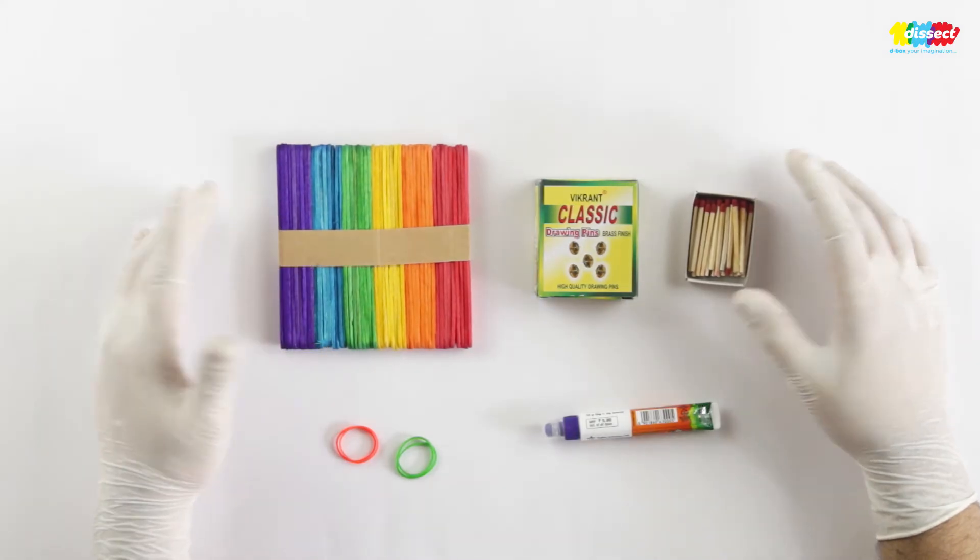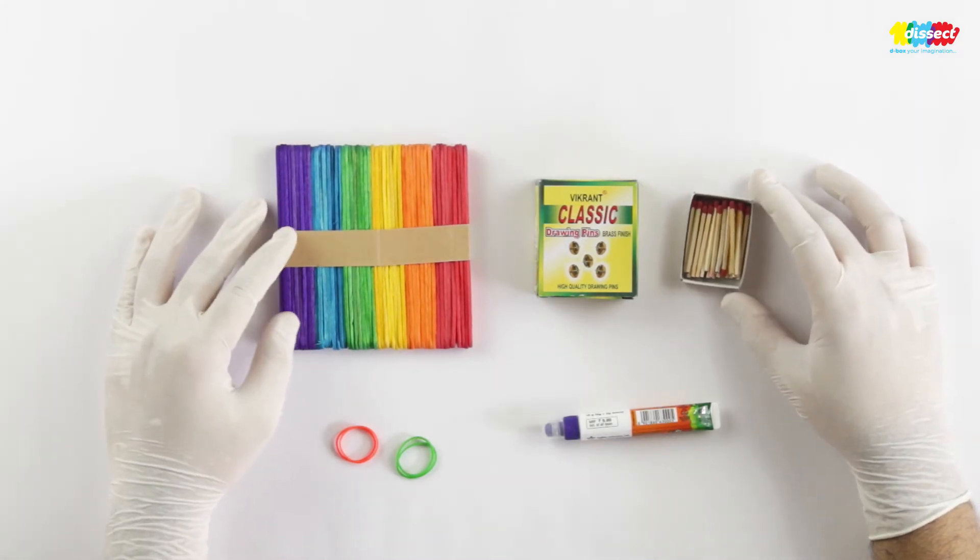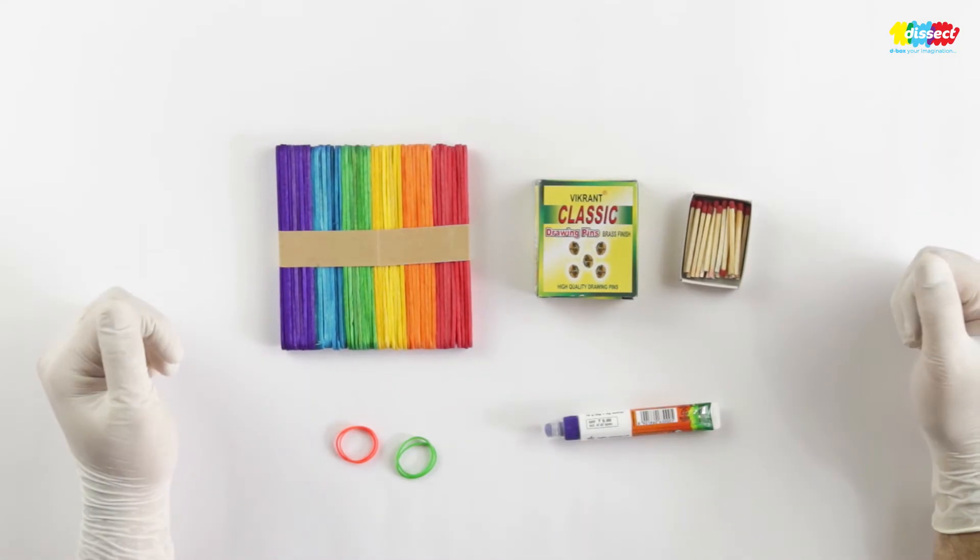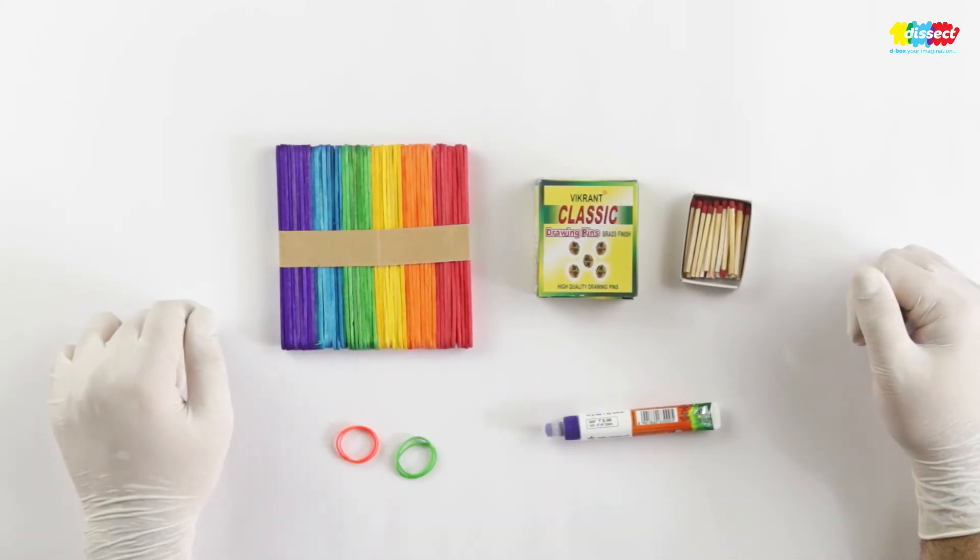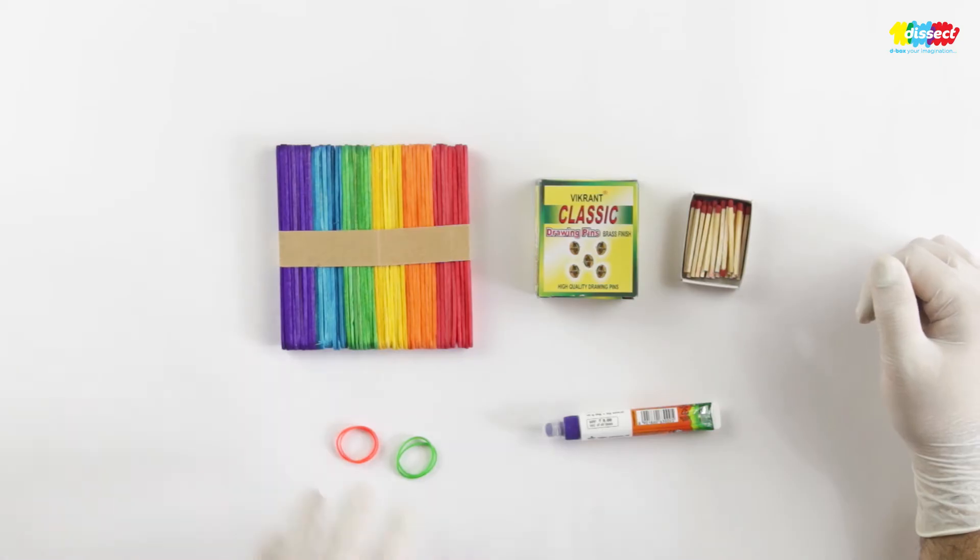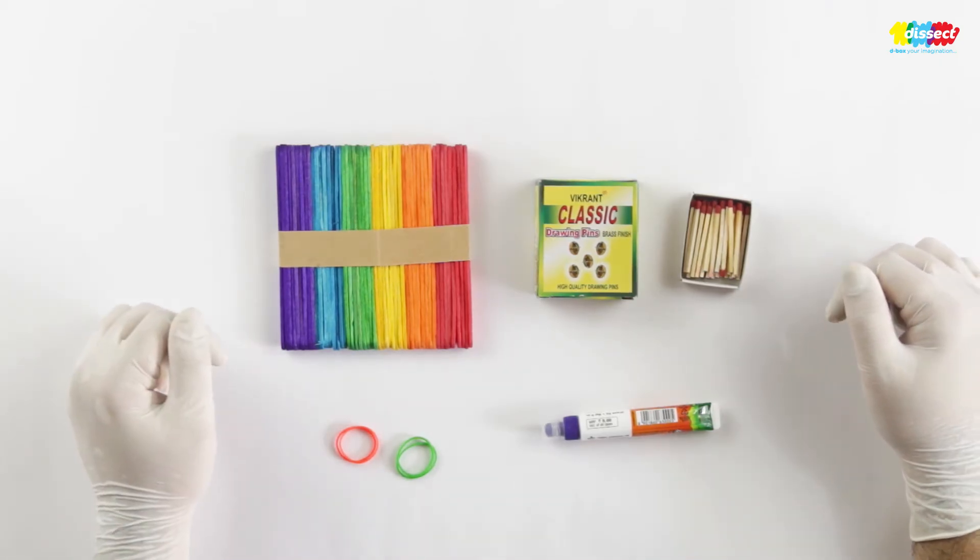So we are here to see how a model of a hand works. We have some materials here: ice cream sticks, drawing pins, mat sticks, a few rubber bands, and Fevicol to stick for making this.